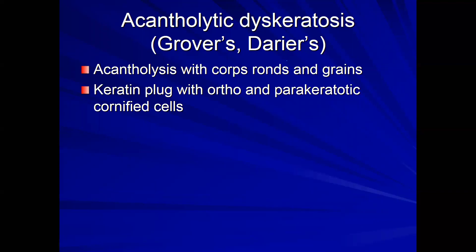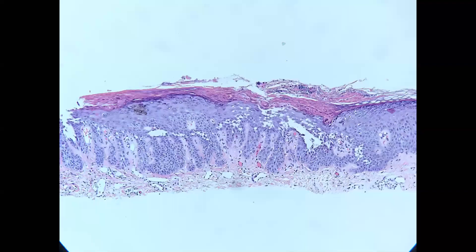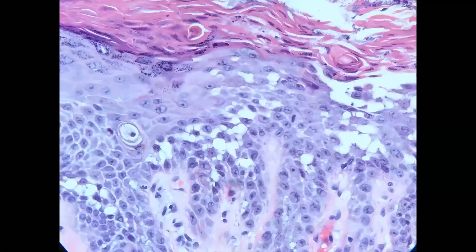In contrast to Hailey-Hailey, the acantholytic dyskeratosis pattern is seen in Grover's disease and Darier's disease. Here you have acantholysis with corps ronds and grains, and you can also see this in a warty dyskeratoma. The acantholysis tends to be suprabasilar — often mistaken for pemphigus — but the key is these dyskeratotic cells resulting in perikeratotic grains, which distinguish this differential from pemphigus or Hailey-Hailey.